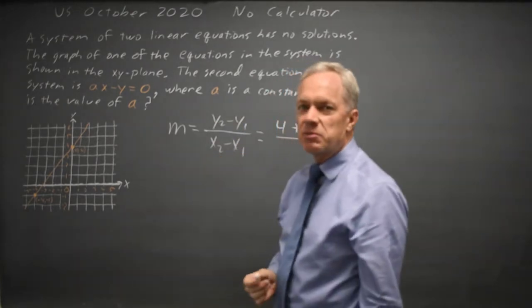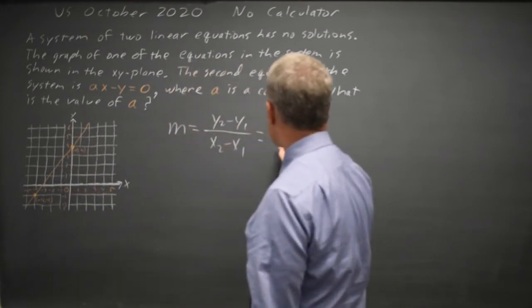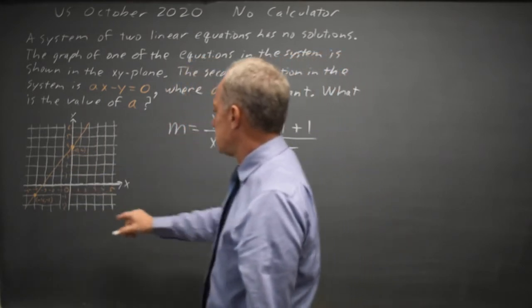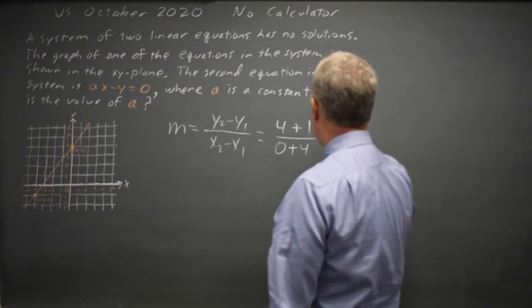Your X2 minus X1 has to be done in the same order, so this point I used first for Y is also first for X. 0 minus the X value of negative 4, so 0 plus 4, so that's 5 fourths.